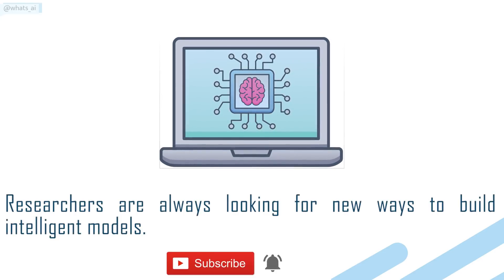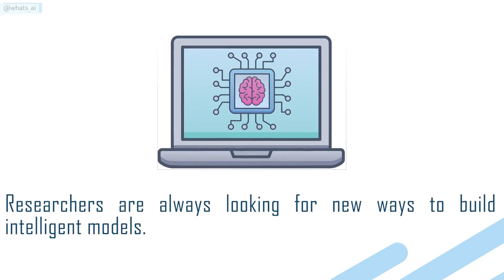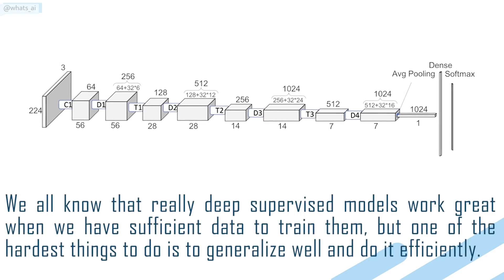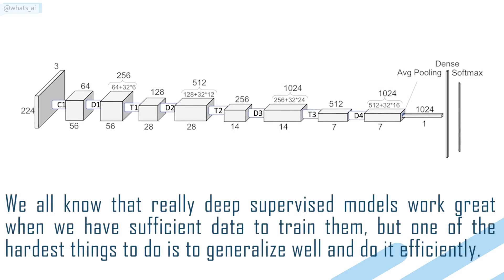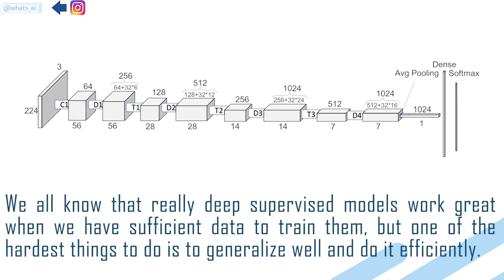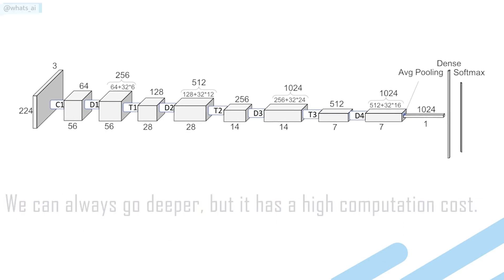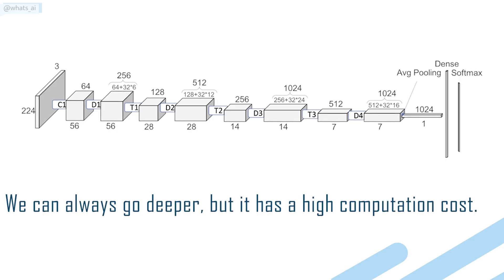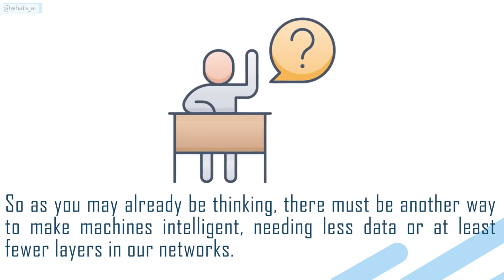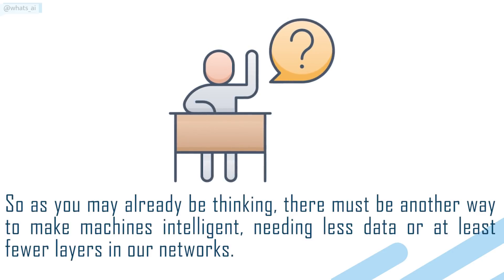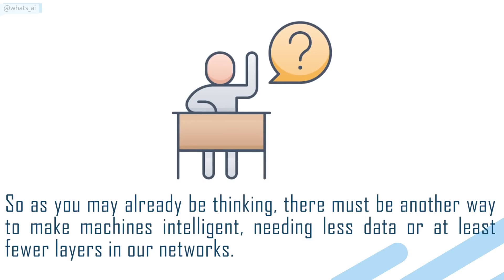Researchers are always looking for new ways to build intelligent models. We all know that really deep supervised models work great when we have sufficient data to train them, but one of the hardest things to do is to generalize well and do it efficiently. We can always go deeper, but it has a high computation cost. So there must be another way to make machines intelligent, needing less data or at least fewer layers in our networks.